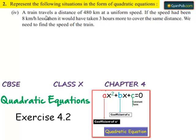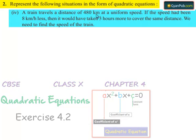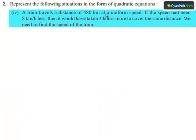Moving to the fourth problem: a train travels a distance of 480 km at a uniform speed. If the speed had been 8 km per hour less, then it would have taken 3 hours more to cover the same distance. We need to find the speed of the train.